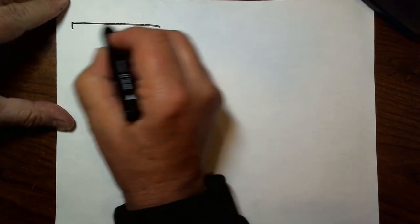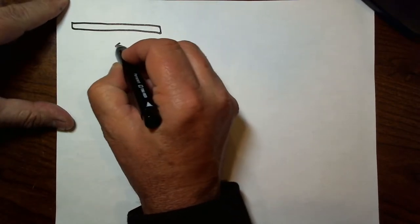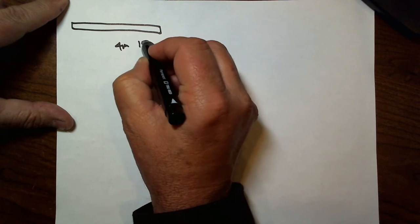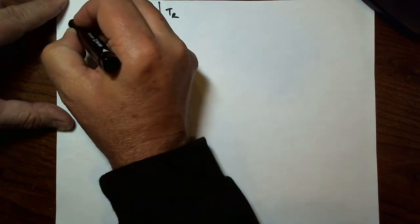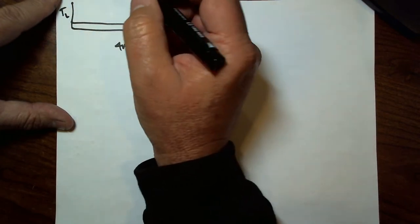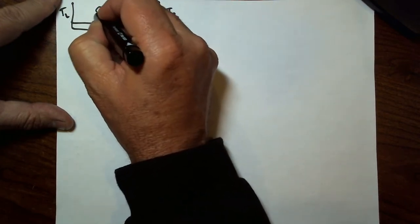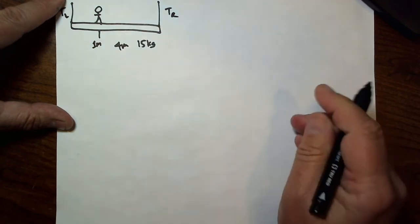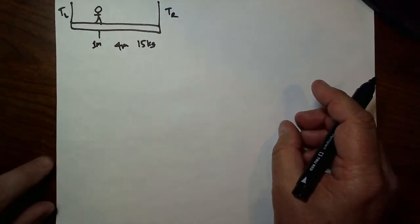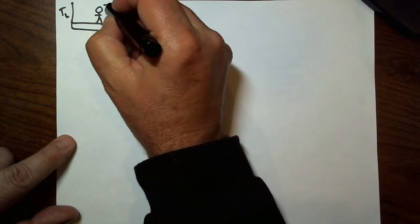What if we have a person standing on our plank of wood? Same plank, same 4-meter plank, same 15-kilogram plank, same rope on the right, same rope on the left. But now we're going to put a dude here. He's going to be at the 1-meter mark and he's going to have a mass of 70 kilograms.